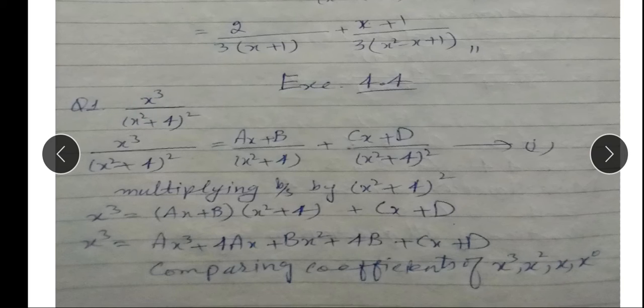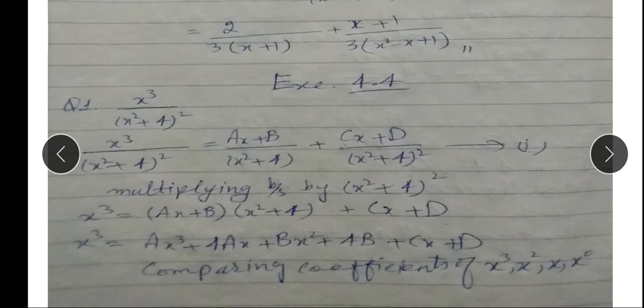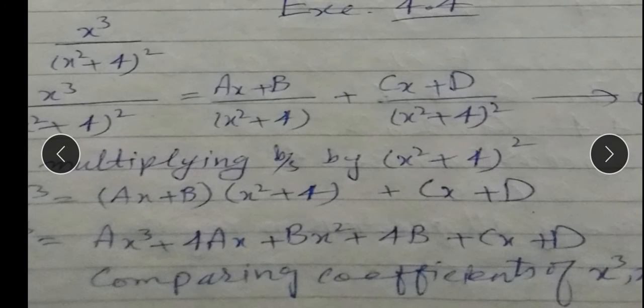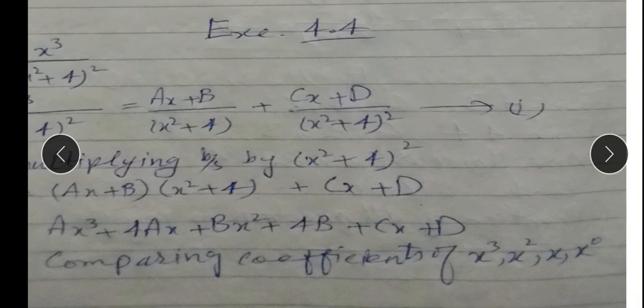Left side: x³ is equal to (Ax+B)(x²+4) + (Cx+D). Expand: Ax³, 4Ax, Bx², 4B, Cx, D. Ab comparing coefficients karte hain — x³, x², x, aur x naught (constant) ke liye.